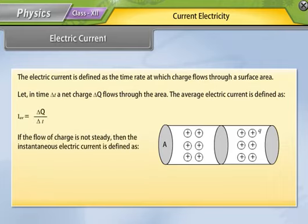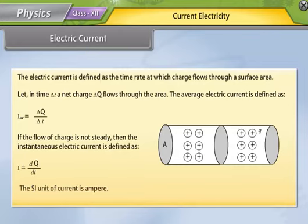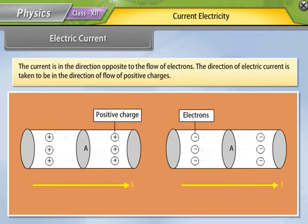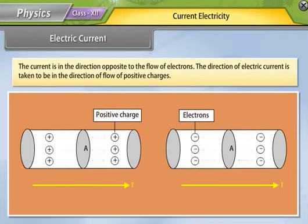If the flow of charge is not steady, then the instantaneous electric current is given by dQ upon dT. The SI unit of current is Ampere. The current is in the direction opposite to the flow of electrons. The direction of electric current is taken to be in the direction of flow of positive charges.